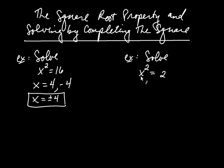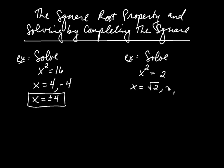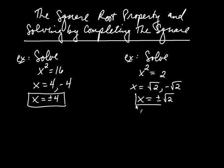Now, over here, you're asked to find a number that you square to get 2. One of the numbers will be the square root of 2 — it's the positive number you square to get 2. There's another number out there, negative square root of 2, because when you square that, you're going to get positive 2 as well. So we write this as x equals positive or negative the square root of 2. Once again, we have two solutions.